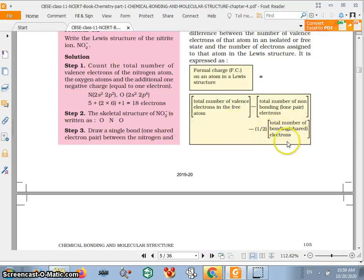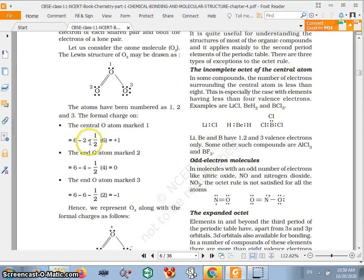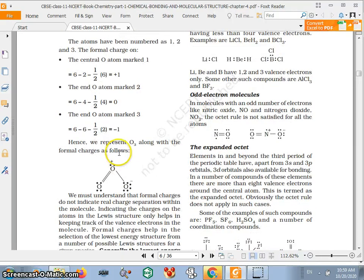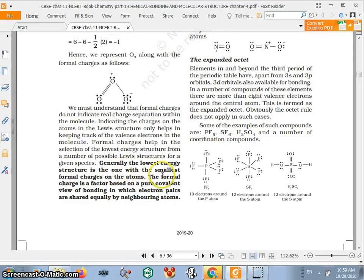And then you have the formula minus half total number of bonding electrons. So here bonding electrons, here six, one, two, three bonds, so six electrons. Here in case of two, this is two bonds, four electrons. And here is one bond, so two electrons. So you can easily find out the charge of both. So generally the lowest energy structure is the one with the smallest formal charge on atoms. The formal charge is a factor based on pure covalent view of bonding in which electrons are shared equally by neighboring atoms.